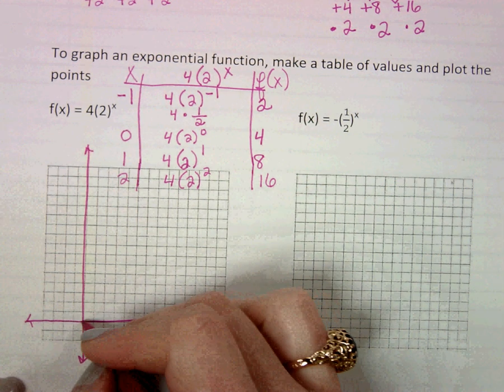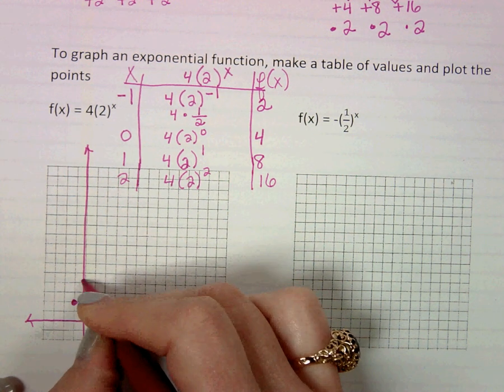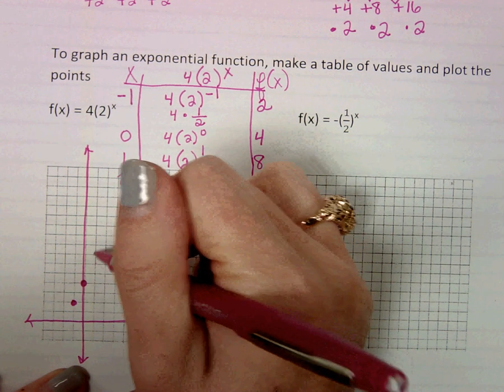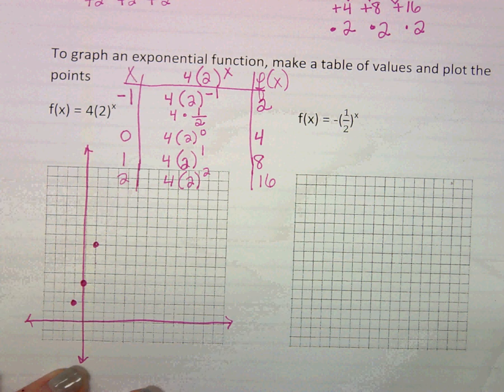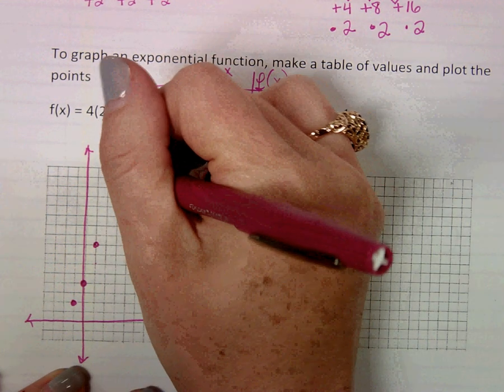I have the point negative one, two, zero, four, one, eight. I hope I counted right. And then 2, 16, which should be right here.